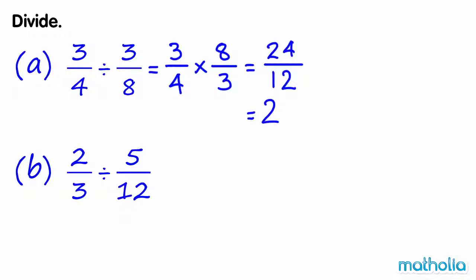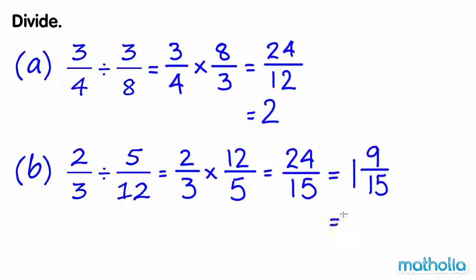2 thirds divided by 5 twelfths equals 2 thirds times 12 over 5. 24 fifteenths is an improper fraction that can be written as the mixed number 1 and 9 fifteenths. 9 fifteenths can be simplified to 3 fifths, so 2 thirds divided by 5 twelfths equals 1 and 3 fifths.